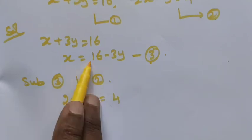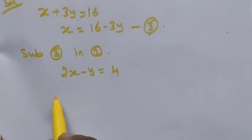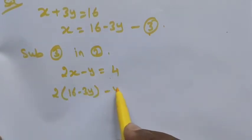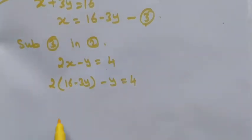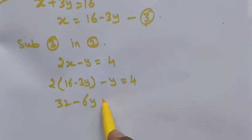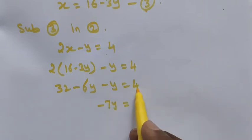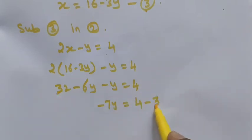In the place of x, substitute the value 16 minus 3y: two into (16 minus 3y) minus y is equal to 4. Multiply through: 32 minus 6y minus y is equal to 4. Combining the y terms gives minus 7y. Taking 32 to the other side, we get minus 7y is equal to 4 minus 32.